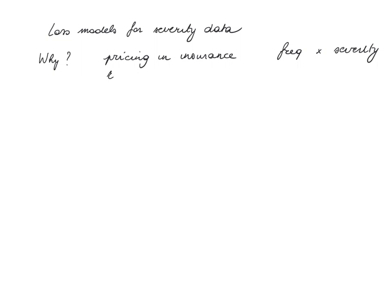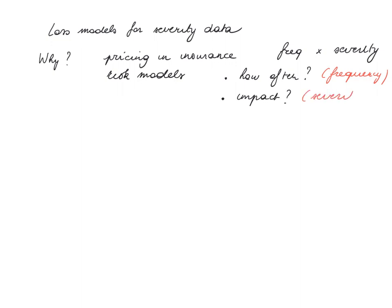In general, in risk models, we care about the following types of random variables. First, how often does the event we're interested in happen? That relates to frequency modeling. Second, if the event happens, what is the impact? To model this impact, we're going to work with severity models. A third typical type of random variable is when does the event happen, or what is the time until the event?